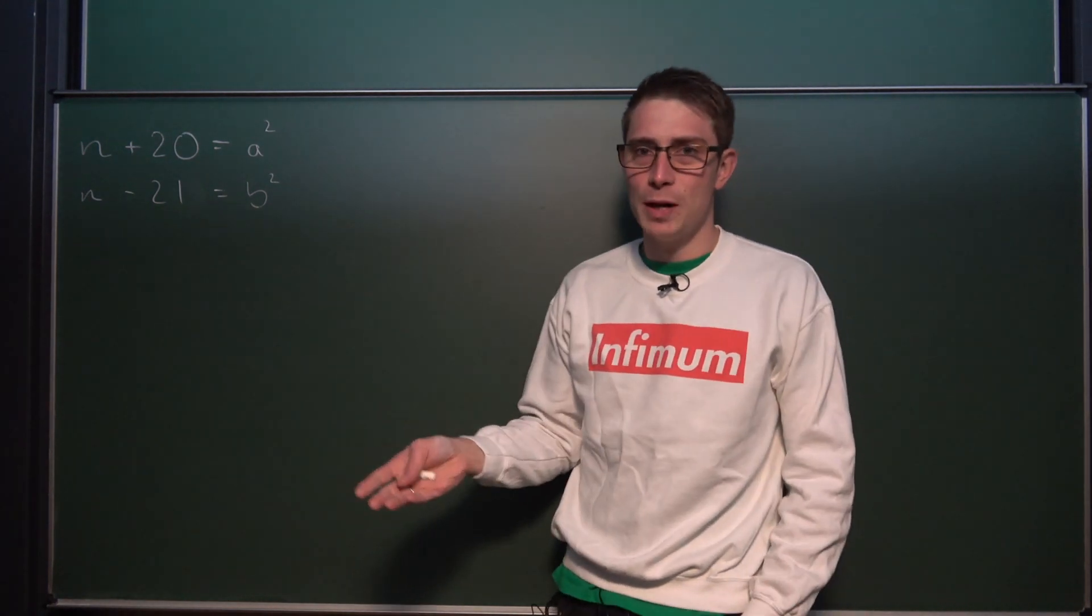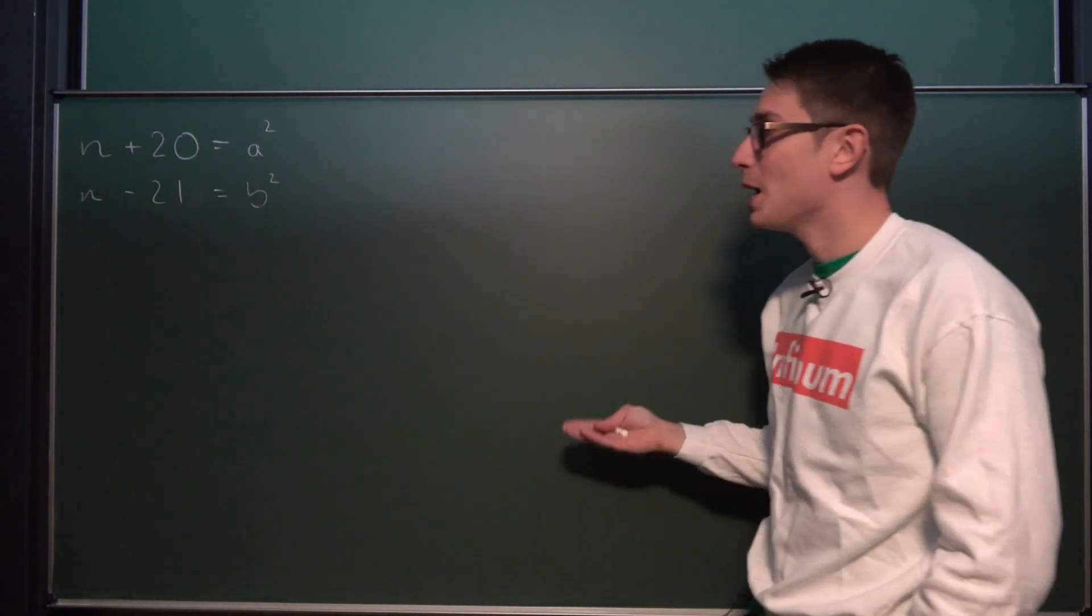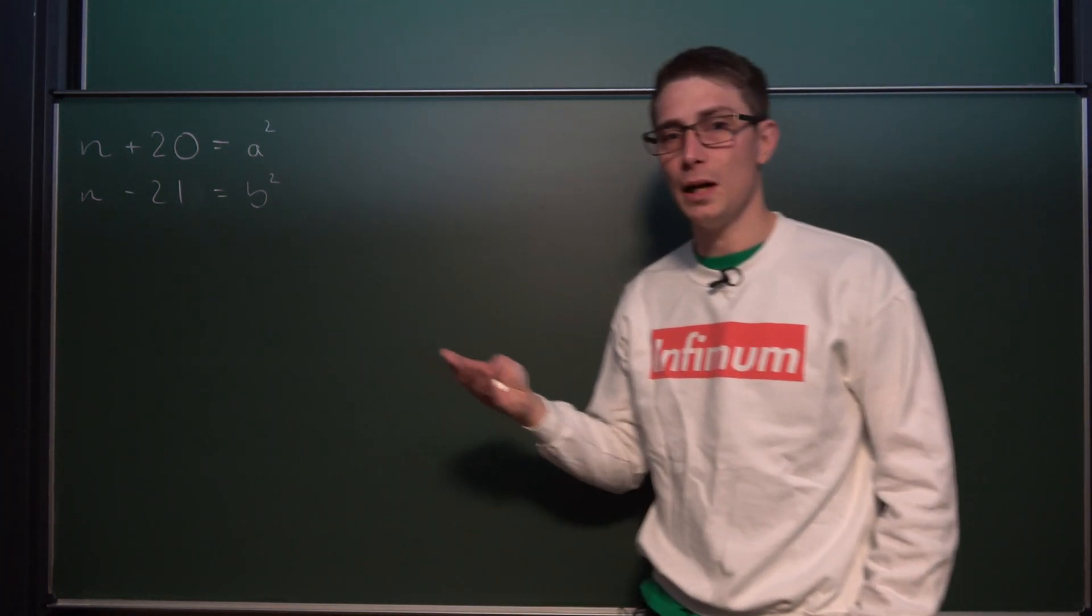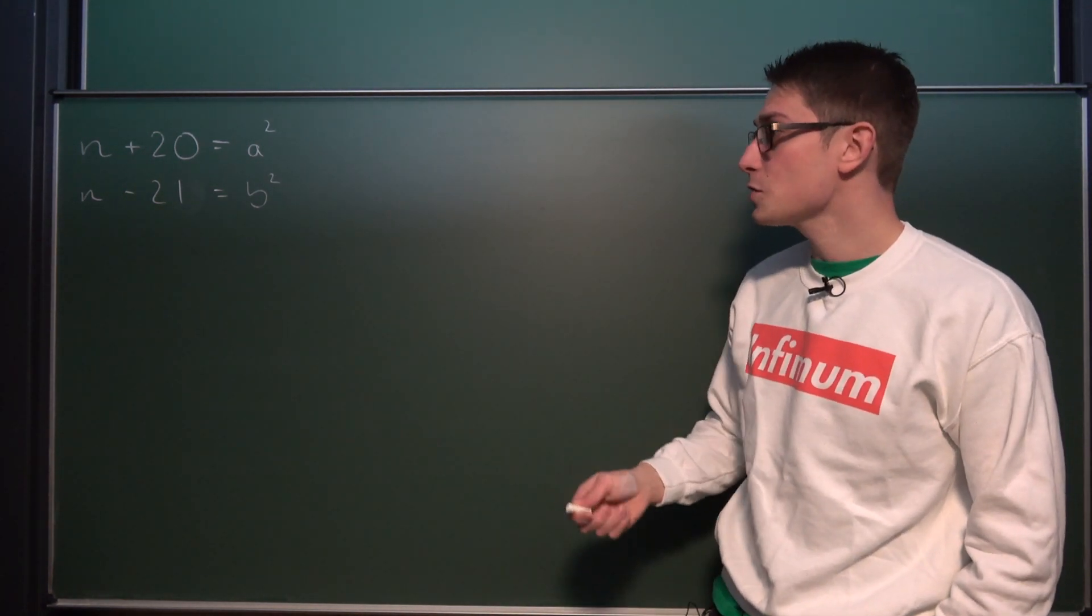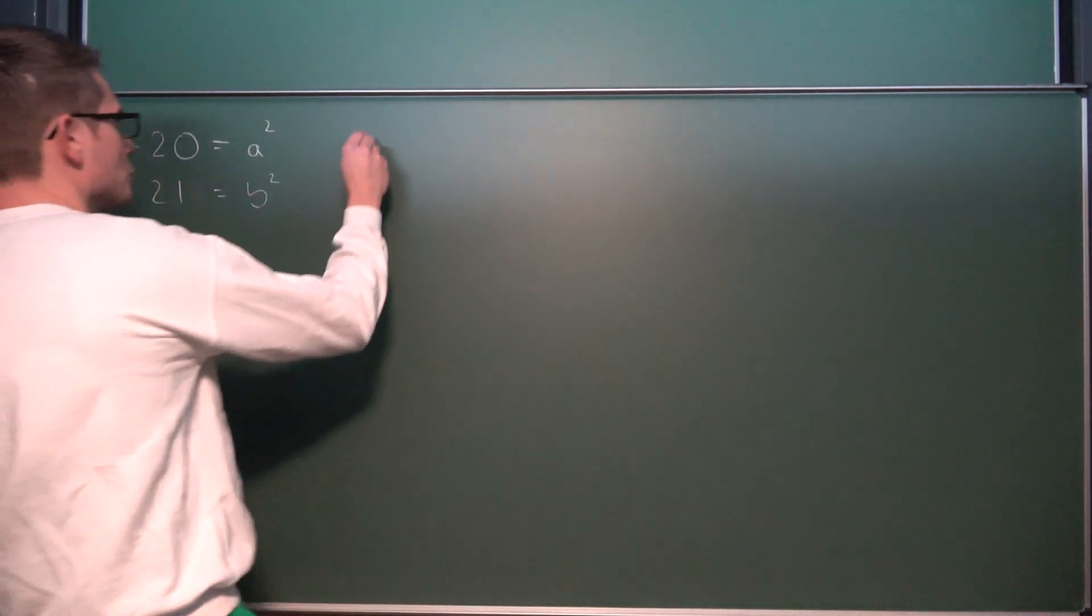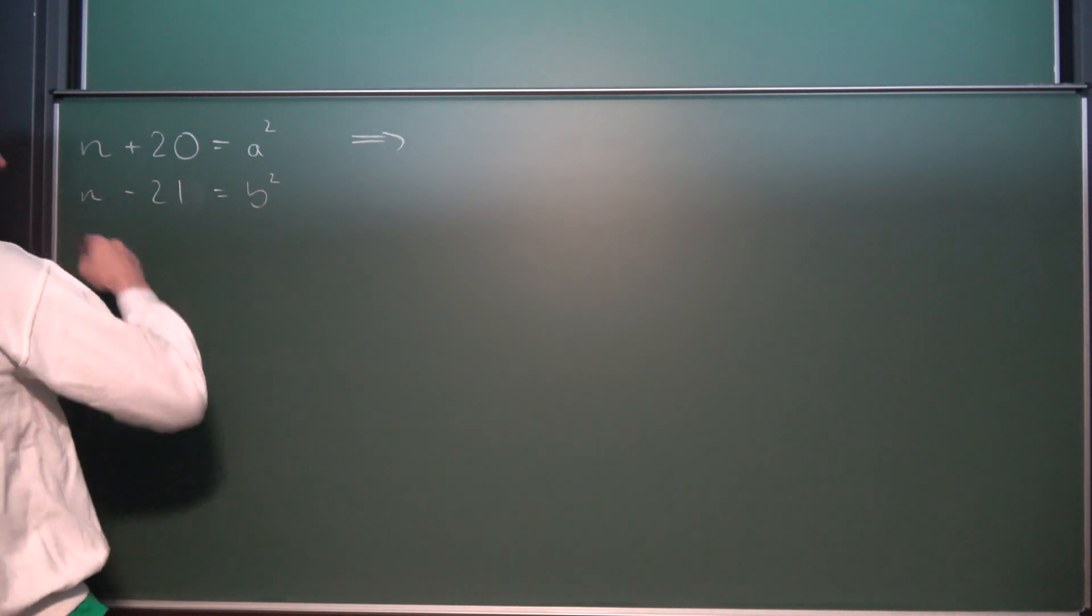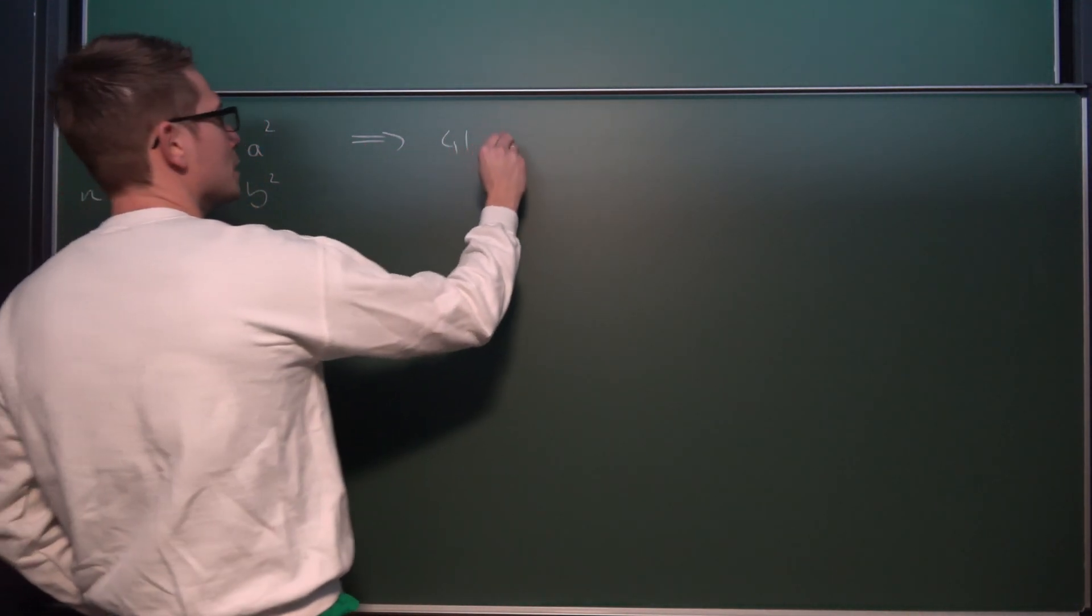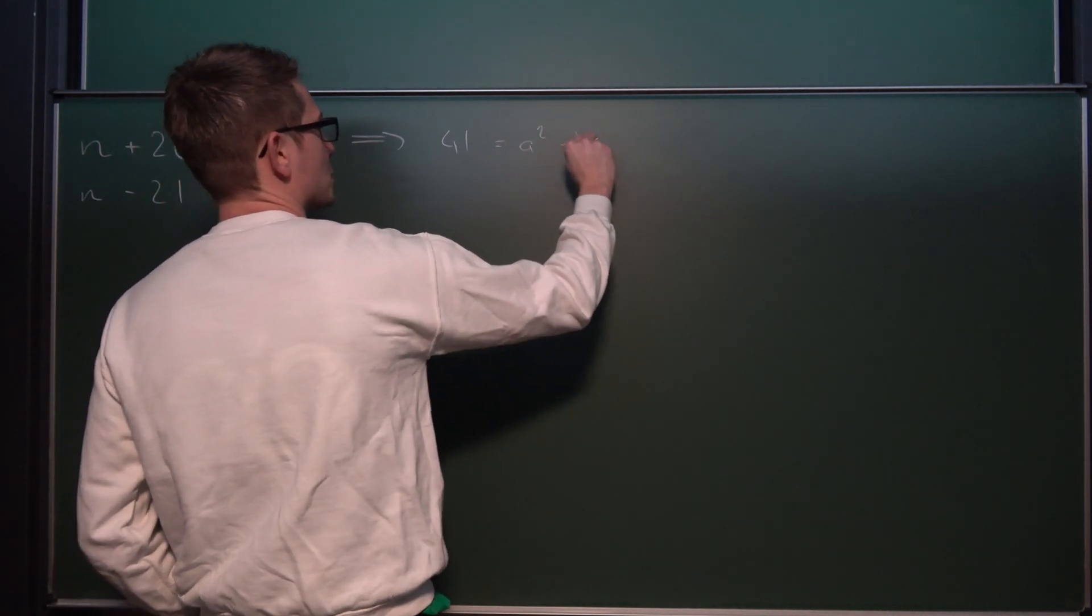We are eliminating N that way, the thing we are searching for, but we are going to get values for A and B out, hopefully. So I'm going to subtract the second equation from the first one, resulting in N minus N being 0. 20 plus 21 is 41 times 21 equals A squared minus B squared.